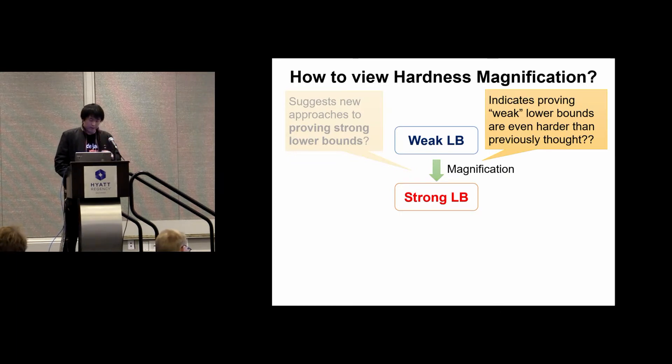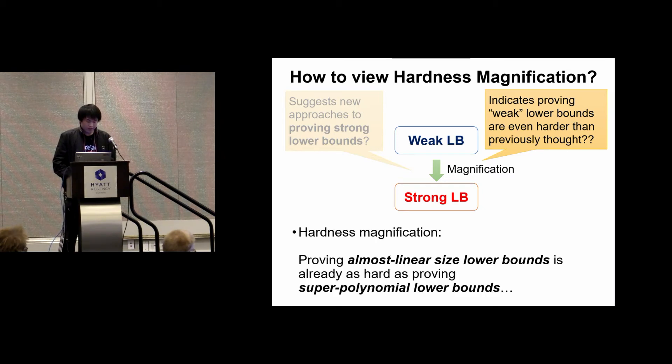However, from another point of view, hardness magnification indicates that proving weak lower bounds are even harder than we previously thought. It implies that proving some almost linear size lower bound is already as hard as proving super-polynomial lower bounds. So this reshapes our intuition about what is weak and what is strong.